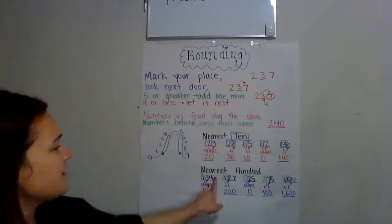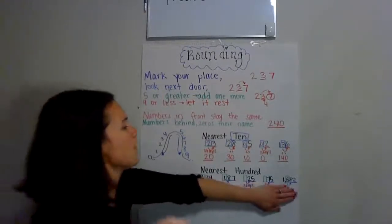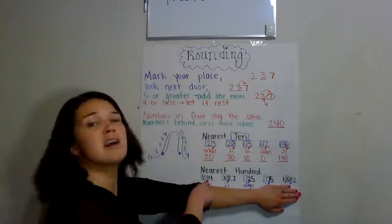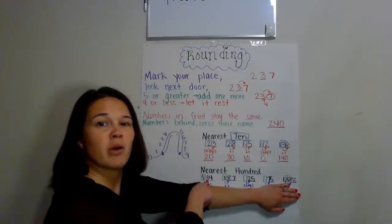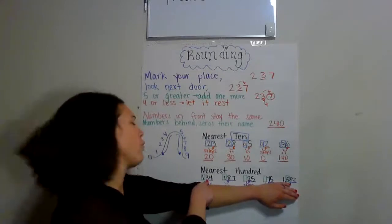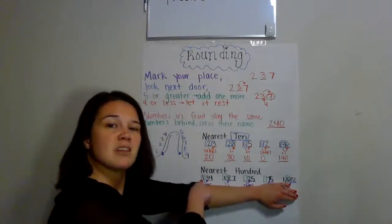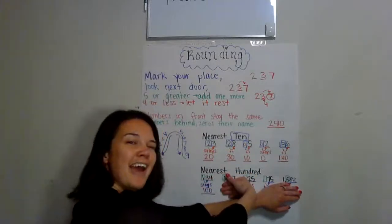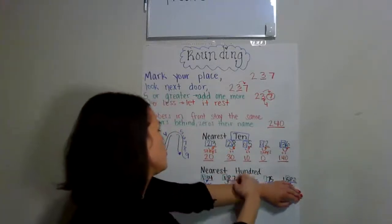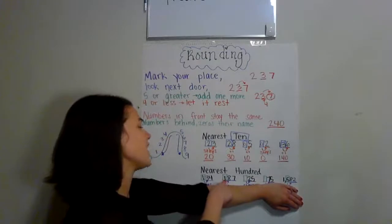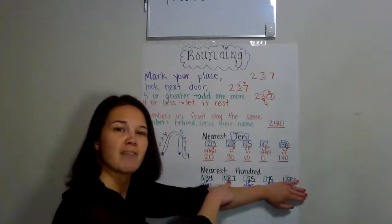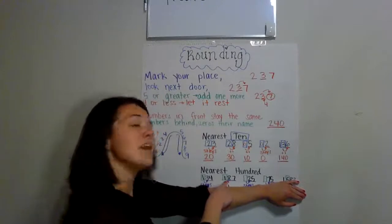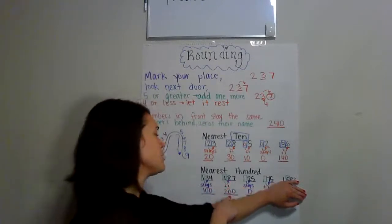Now we're going to round these to the nearest 100. 134 — we find the hundreds place, look next door. Is that five or bigger? Four or less. So we'll let the one rest. 134 rounds down to 100. 187 — find the place, look next door. Is that five or bigger? Yes. So we'll add one more. 187 rounds up to 200.